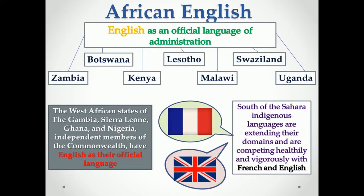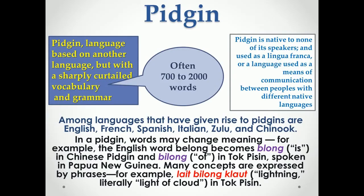A pidgin language is based on another language but with a sharply curtailed vocabulary — often 700 to 2,000 words — and grammar native to none of its speakers, used as a lingua franca, or a language used as a means of communication between peoples with different native languages. A pidgin usually derives its vocabulary from one principal language, but its grammar will reflect the structures of each speaker's native tongue, or it will evolve a distinct grammar. Among languages that have given rise to pidgins are English, French, Spanish, Italian, Zulu, and Chinook.